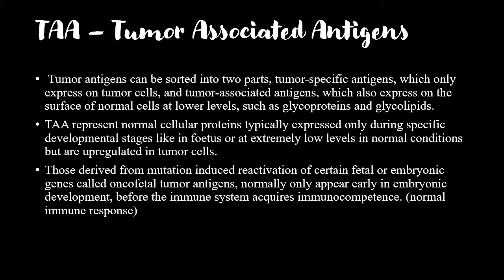Tumor antigens can be sorted into two parts: tumor specific antigens, which are only expressed on tumor cells, and tumor associated antigens, which are also expressed on the surface of normal cells at lower levels, such as glycoproteins and glycolipids.